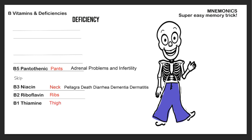B6 is pyridoxine. We're in the mid area, so picture a pyramid halter top. Pyridoxine is the halter top in the middle. When you're deficient in B6, you can have anemia and chronic stress, though it's pretty rare since it's found in many foods. If you need to remember that for your test, add details to your halter top drawing.